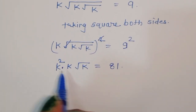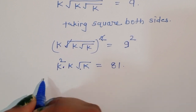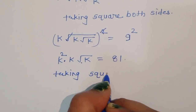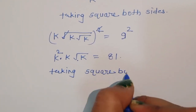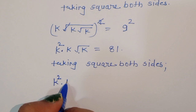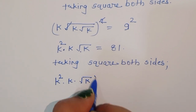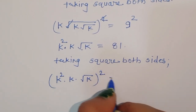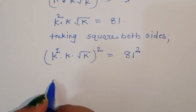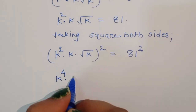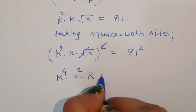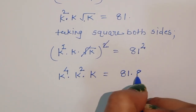Now because we have to cancel this square root also, we are again taking square both sides. Then we will get k squared times k times square root of k, whole squared, is equal to 81 squared. Now k squared squared is k to the power 4, times k squared, and this square cancels from the square root k. So k to the power 4 times k squared times k is equal to 81 times 81.